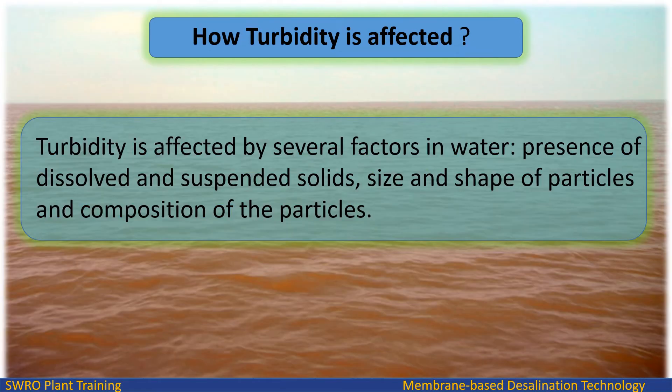How is turbidity affected? Turbidity is affected by several factors in water: the presence of dissolved and suspended solids, and the size, shape, and composition of the particles.